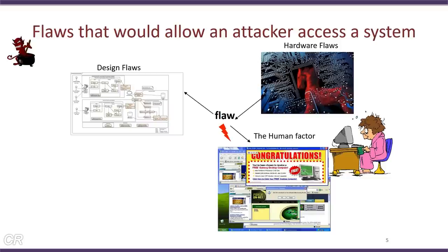The third aspect is the human factor. Even if we build a system with no design flaws and no hardware trojans, there is eventually a human who uses the system — smartphones, laptops, desktops — and this can be a source of vulnerability. For example, all of us have received spam emails or pop-up windows, and many people fall prey to these and click on the buttons, triggering external malware, viruses, or worms to enter the system.